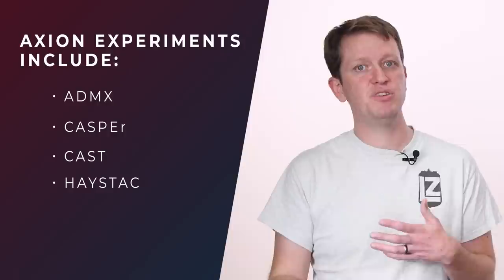Axion experiments are also starting to scale up, but they use really different techniques from WIMP searches. For example, some of them use special cavities or magnets to make an electromagnetic field, then wait for an axion to interact and convert into photons. There are some really ingenious ways of looking for dark matter.